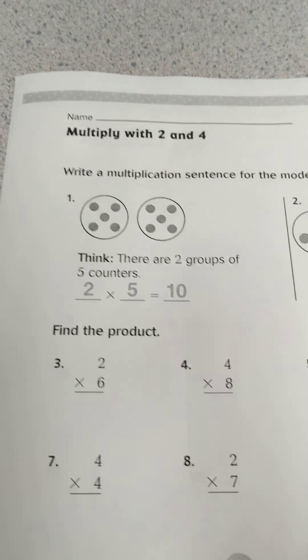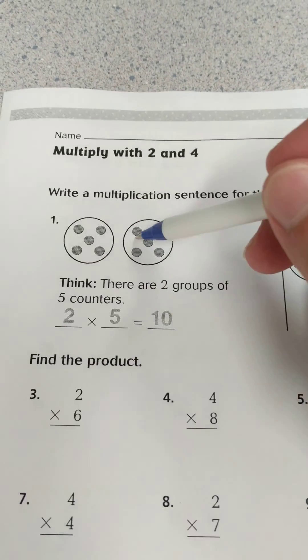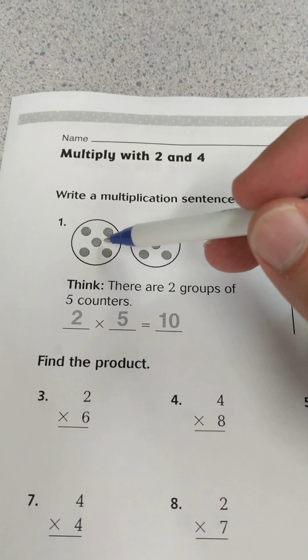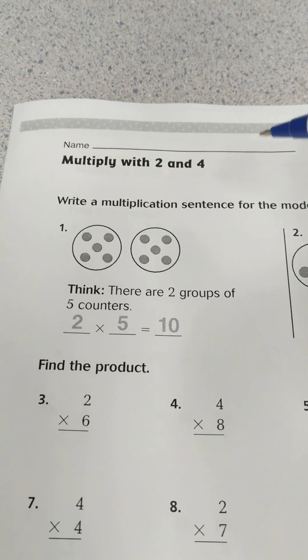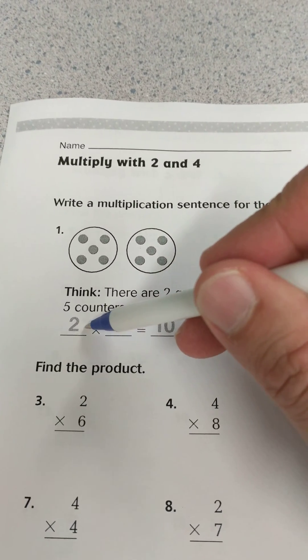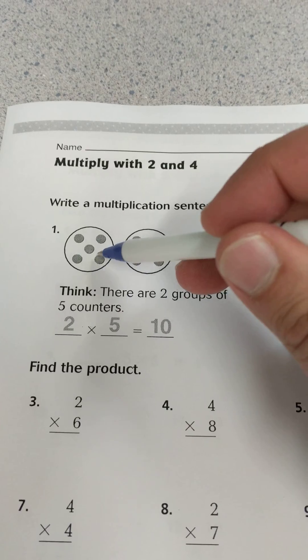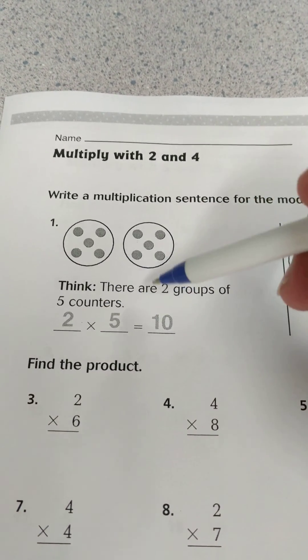So we're going to look at number 1 here, which they've already done. And it shows you a picture of two groups, and in each of those two groups there's 5 counters in each group. So the number they placed here first is the number of groups. So that's 2, and then number 5 is how many are contained in each one of those groups, which is 5. So 2 times 5 is 10.